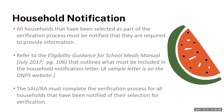All households that have been selected as part of the verification process must be notified that they are required to provide information. Please refer to the eligibility guidance for school meals manual page 106, which outlines what must be included in the household notification letter. There is a sample letter template on our NHDOE website. The SAU or RA must complete the verification process for all households that have been notified of their selection, and template documents are posted on our website in the verification section of the NSLP link.